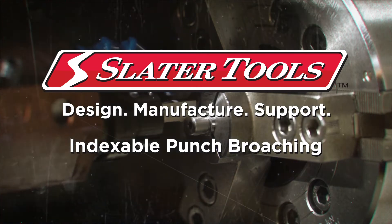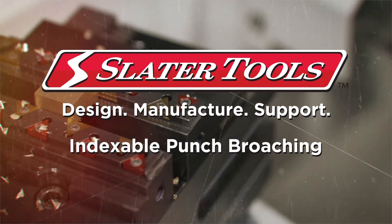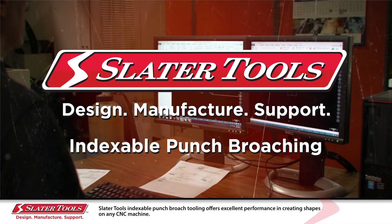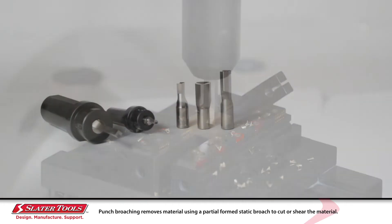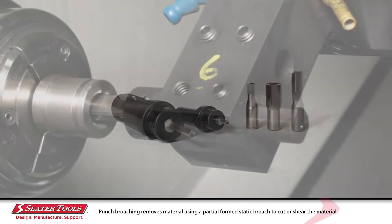Slater Tools indexable punch broach tooling offers excellent performance in creating shapes on any CNC machine. Punch broaching removes material using a partial form static broach to cut or shear the material.